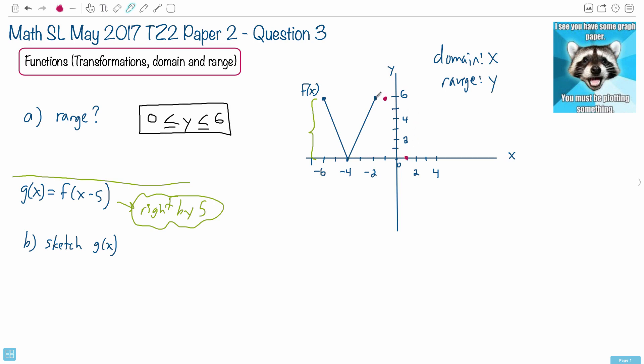This point right here, which is at minus two, goes to the right by five. So one, two, three, four, five. There we go.